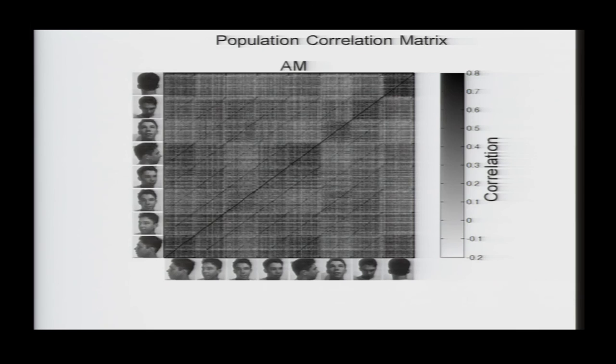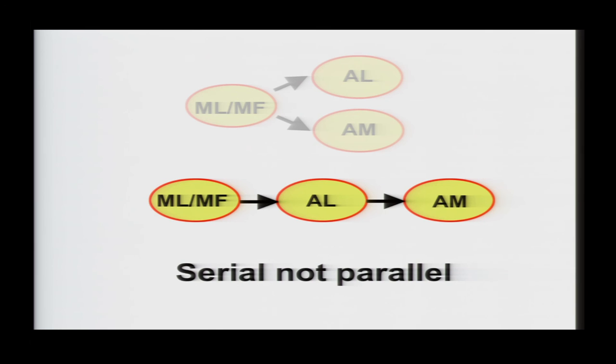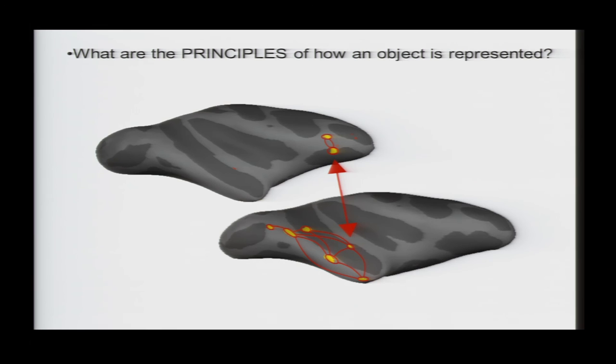So, I think our results suggest that there's a serial relationship between these three patches, with AM at the apex. So, I hope it's clear that this system of face patches in the temporal and frontal lobes is going to help us enormously to understand the principles by which a complex object is represented, because it breaks down this enormously complicated problem into these six plus three natural steps.